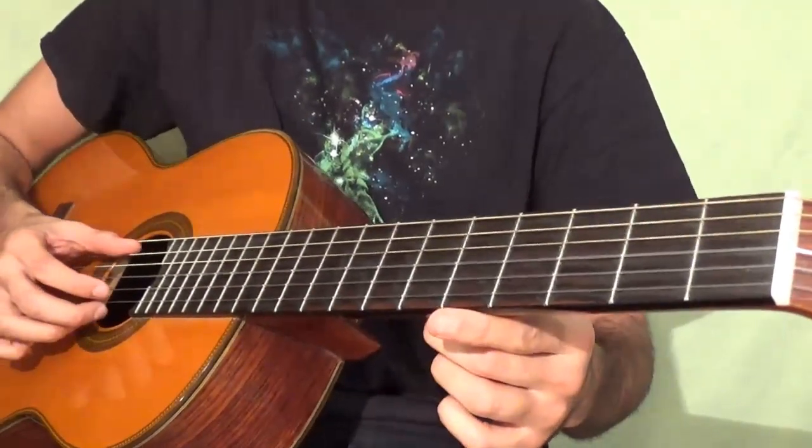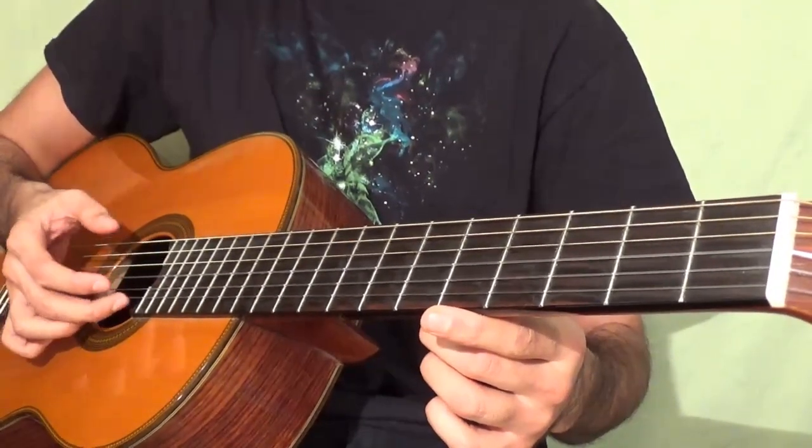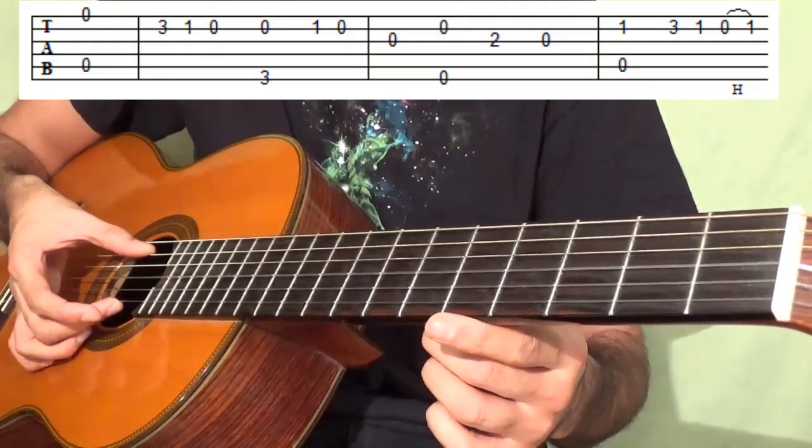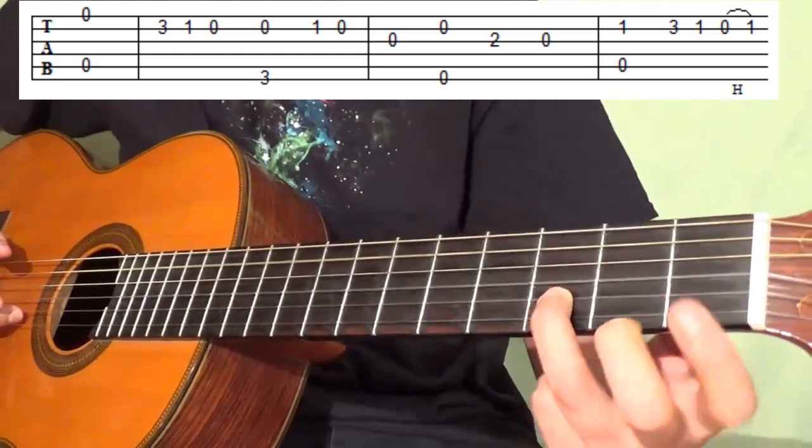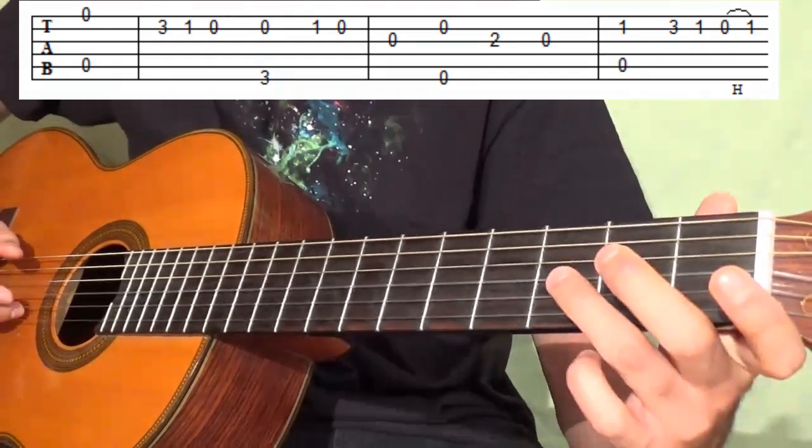We start this one by plucking an open A string and an open E string at the same time. I use my thumb and middle fingers there. And then we're going to play 3-1-0 on the B string.